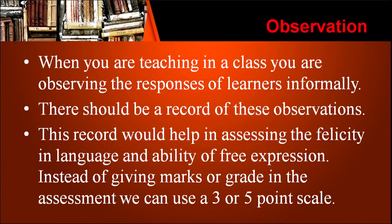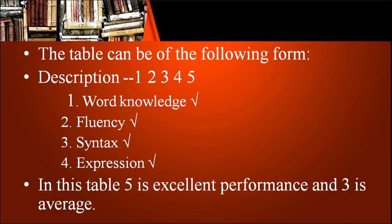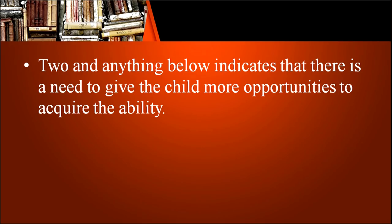When teaching a class, you are informally observing the responses of learners, and there should be a record of these observations. This record helps in assessing fluency in language and ability of free expression. Instead of marks or grades, we can use a 3-to-5-point scale covering word knowledge, fluency, syntax, and expression — where 5 is excellent and 3 is average. Maintain a record of every child for reference. A score of 2 or below indicates the child needs more opportunities to acquire the ability.